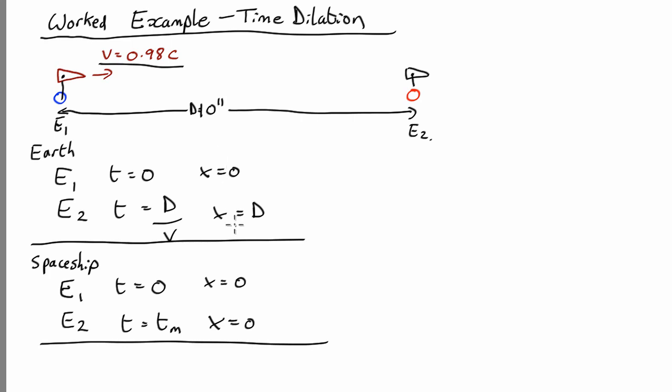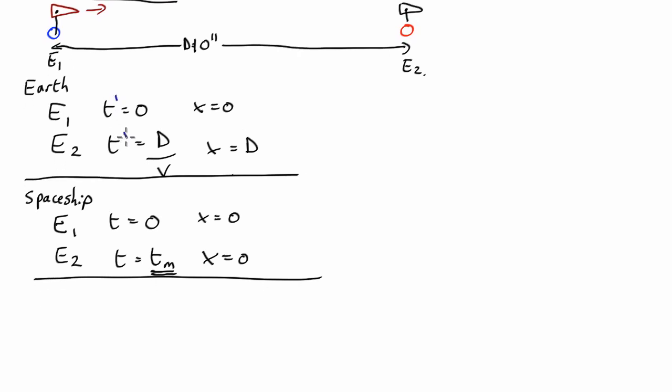So we've got the two different events in the two different frames of reference, and what we want to find out is how long it took from the spaceship's point of view. Now we have to decide which of these two frames we're going to call the normal frame, which we're going to call the prime frame. It doesn't matter, it'll be either way around. Let's call the Earth frame the prime, so we'll call these ones the primes.